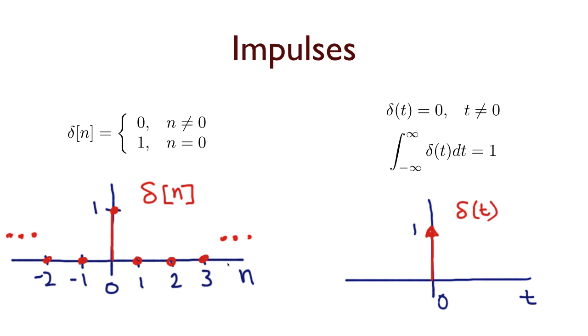So, we usually draw this as shown here by an upward facing arrow, and oftentimes we'll put a symbol next to the arrow, like the one that's shown here, to indicate that the area under this impulse is unity. If I put some other number here, like if it were 10, then that would indicate that the area under this impulse is 10.